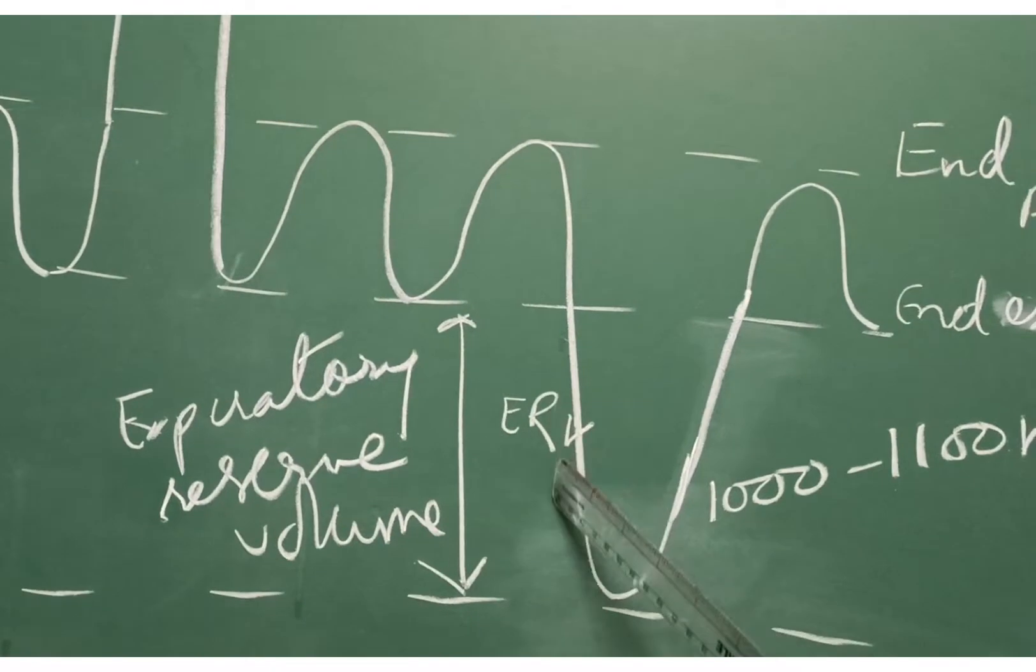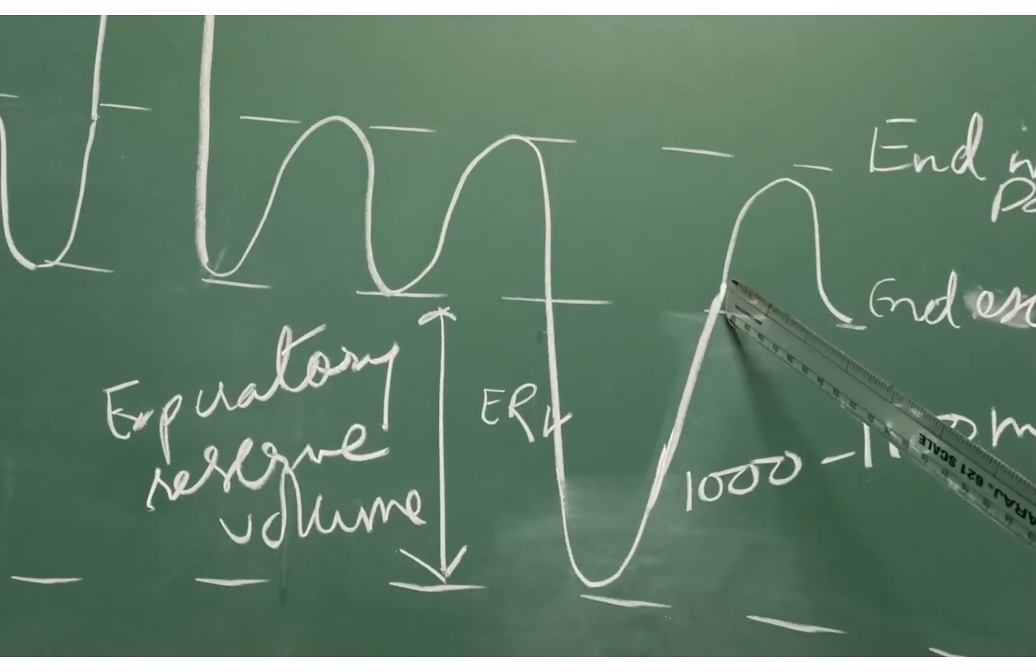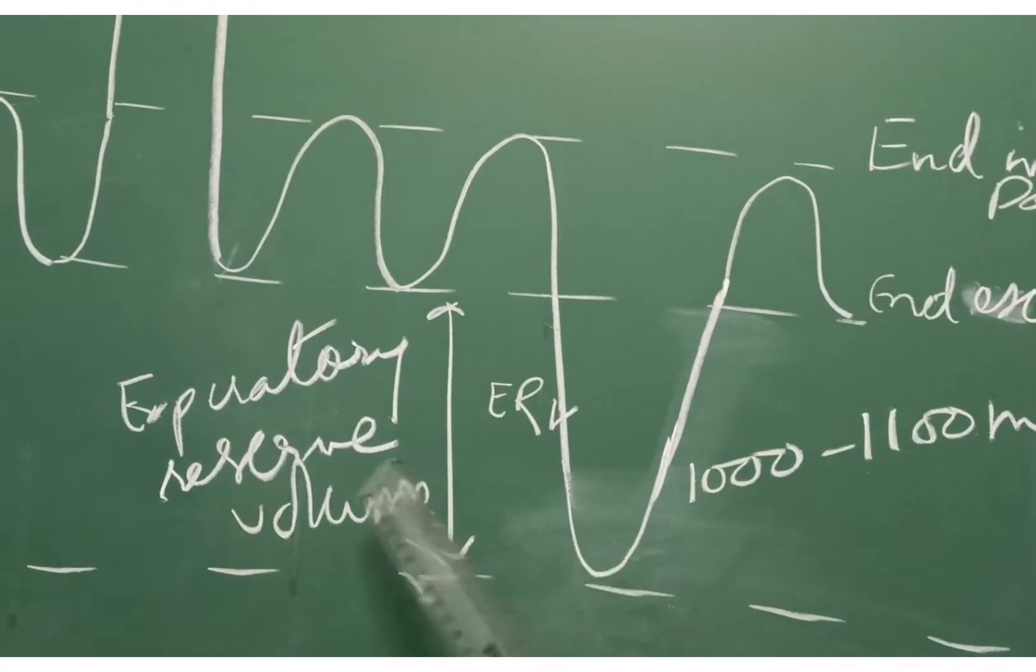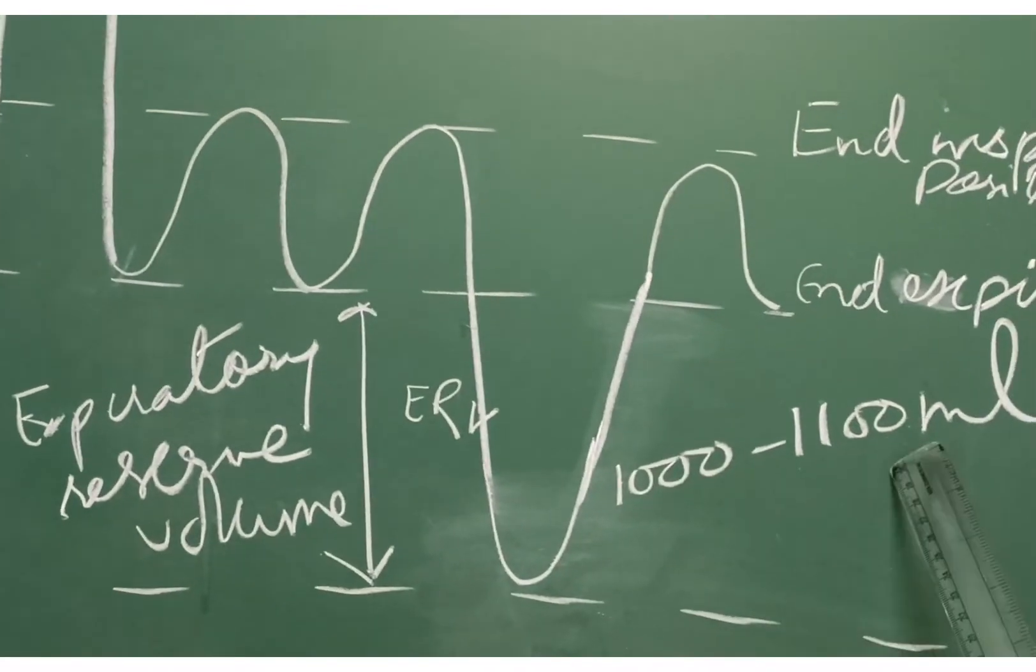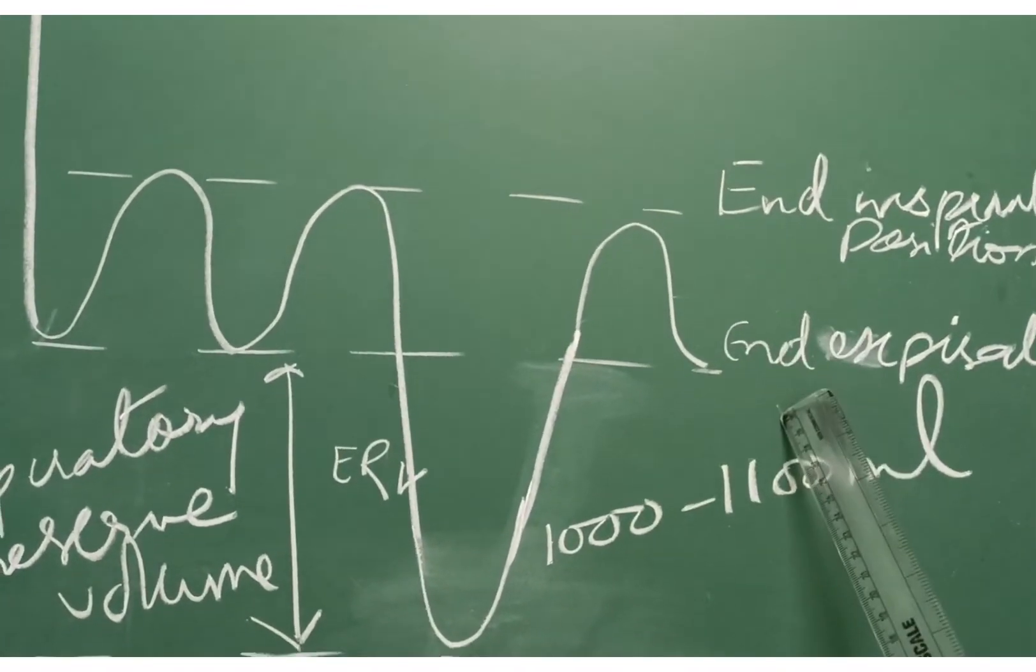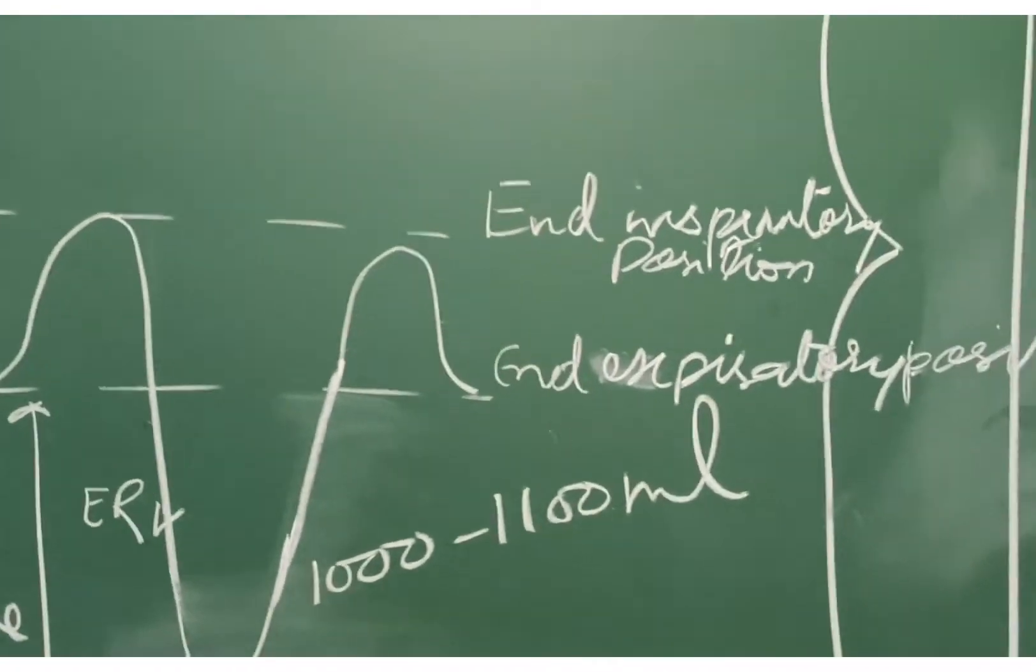Third wave, expiratory reserve volume. It is the maximum volume of air which can be expired after a normal tidal expiration. It is around 1000ml to 1100ml. These are the end expiratory and inspiratory positions.